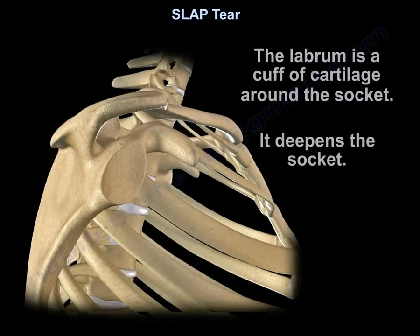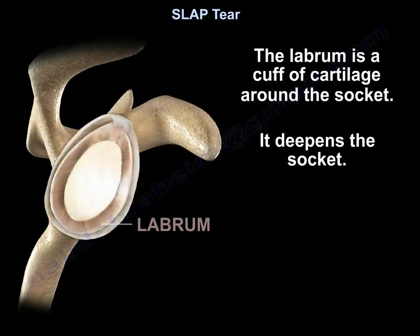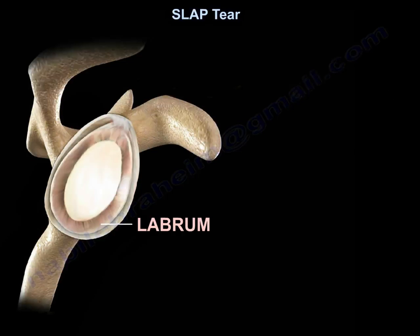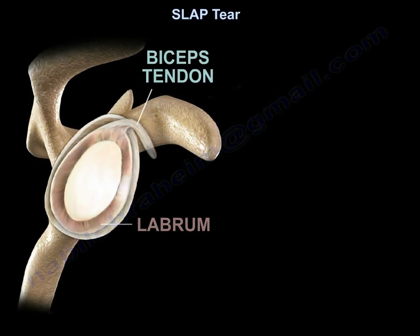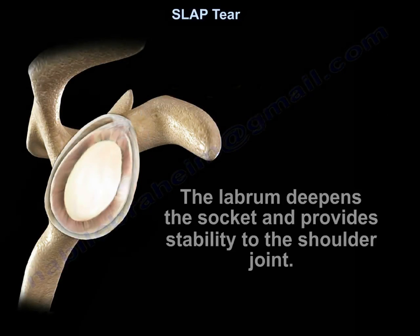The labrum is a cuff of cartilage around the socket. It deepens the socket. The biceps tendon inserts into the top of the labrum and glenoid. The labrum deepens the socket and provides stability to the shoulder joint.